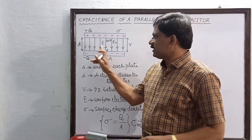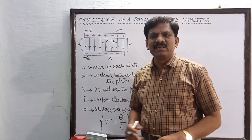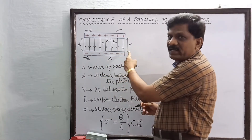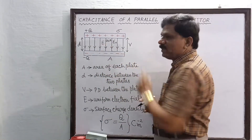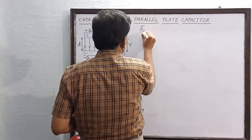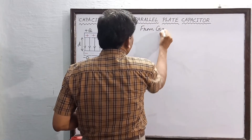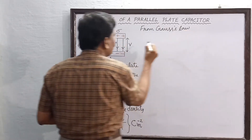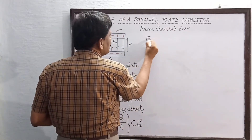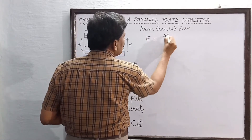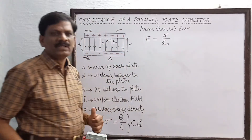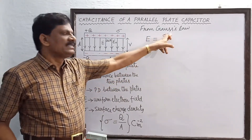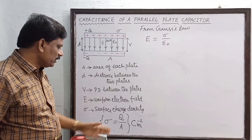The first step is the expression for the electric field. The lines of force are uniform and parallel, so this is an application of Gauss's Law. From Gauss's Law, the electric field is given by E = σ/ε₀. In place of σ, we substitute q/A.